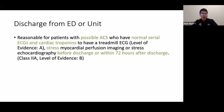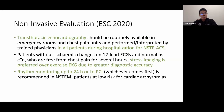For patients with possible ACS, normal serial EKGs, and normal troponins, it is reasonable to perform a treadmill EKG or stress test before or within 72 hours of discharge. ESC 2020 recommends transthoracic echo for all patients admitted with non-ST ACS, and favors stress imaging over standard exercise EKGs due to greater diagnostic accuracy. Patients admitted with non-ST ACS should undergo telemetry and rhythm monitoring up to 24 hours or until PCI, whichever comes first.